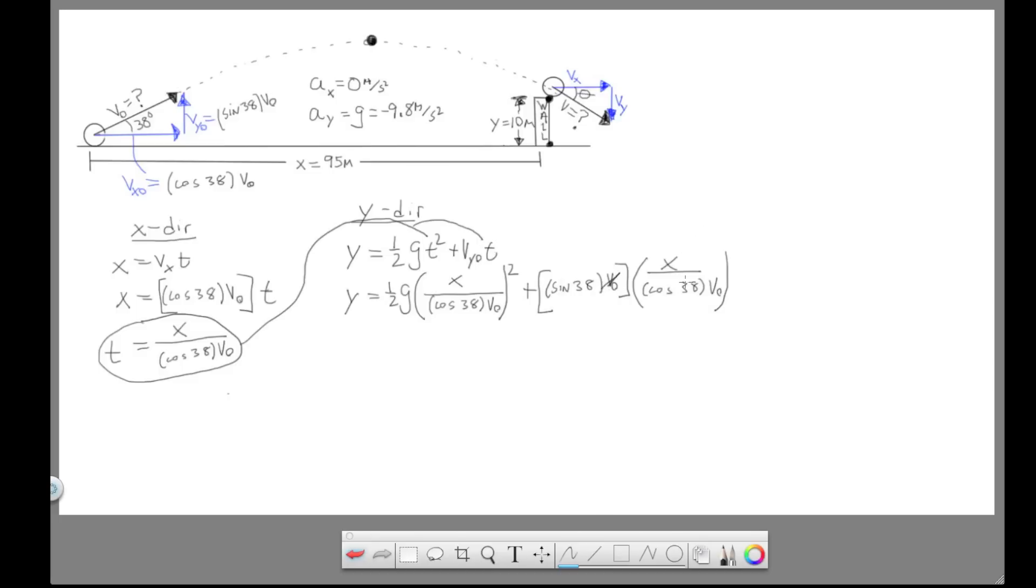Sine 38 V initial. And then time is X over cosine 38 V initial. So now at this point, we can simplify this. So the V initials cancel. We have top and bottom. Those V initials cancel out. And then as I mentioned at the start of the problem, we have sine divided by cosine. So sine 38 over cosine 38, we can simplify to tangent 38. So I'm going to rewrite this again. And I'm going to clean it up a little bit. So this is going to be GX squared over 2 cosine 38 squared V initial squared plus tangent 38 X.